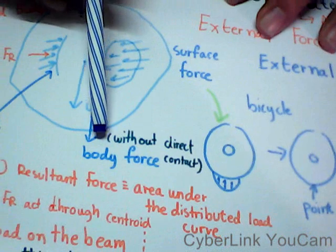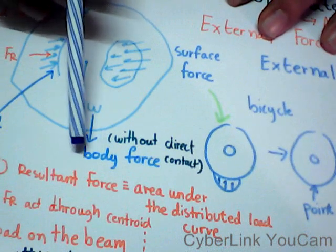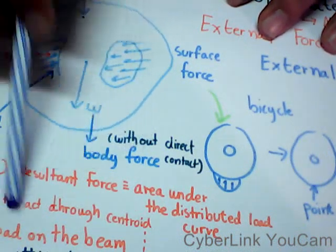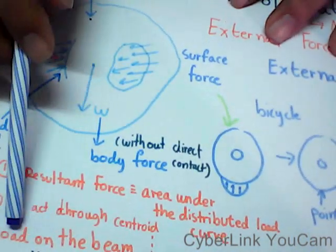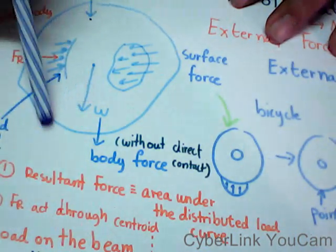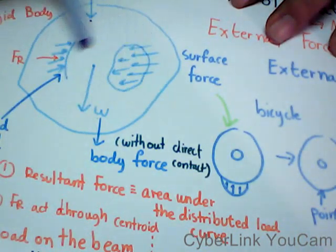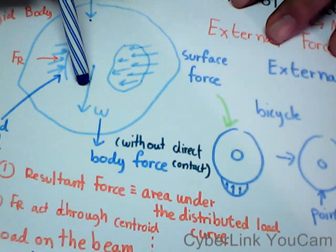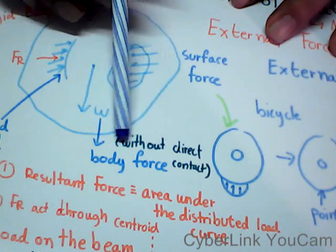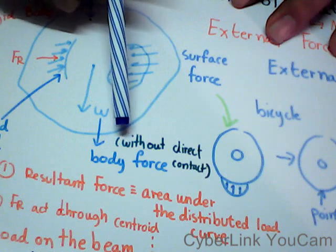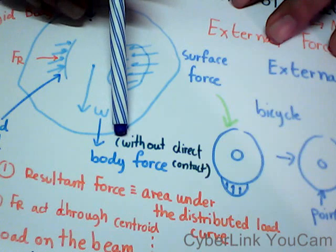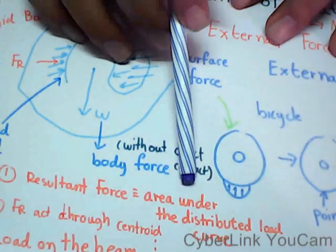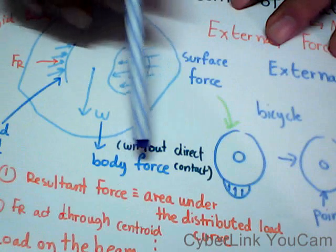Body force is exerted from another body. For example, weight is a body force — it is exerted by the Earth on this body and generates the weight. You can notice that this force is generated without any direct contact. That is the body force.